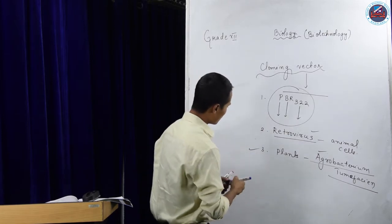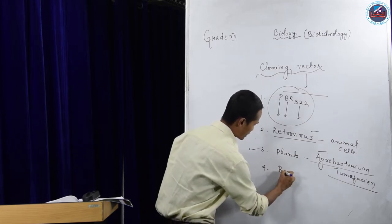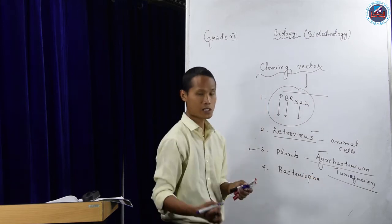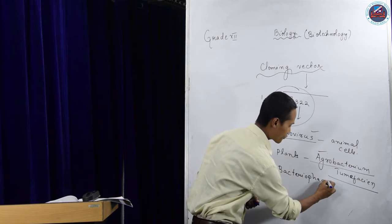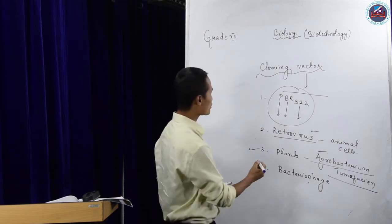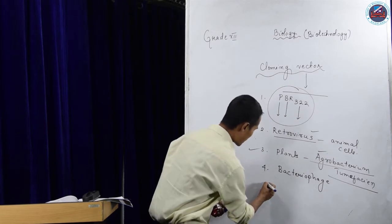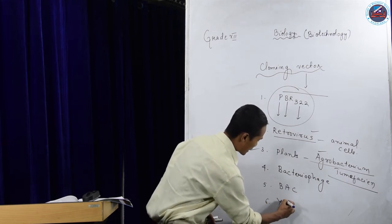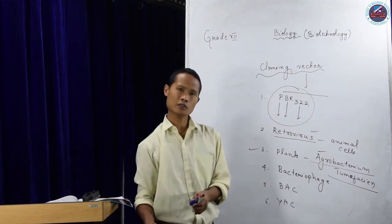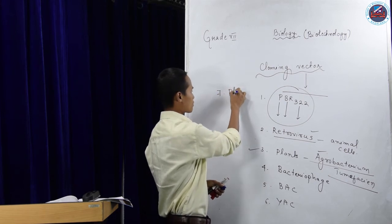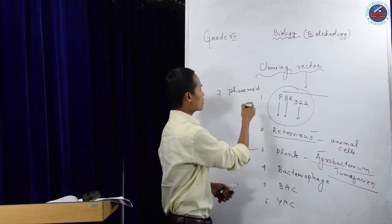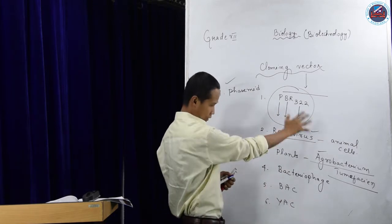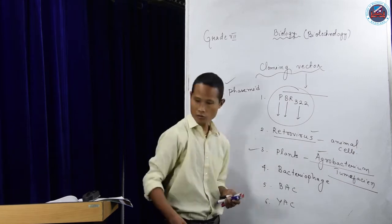Number 4, we can also use bacteriophages — a virus that infects bacteria — like T2 phage, which can also be used as a vector. Not only that, we have BAC, Bacterial Artificial Chromosome, and then we also have YAC, Yeast Artificial Chromosome. Number 7 is phasmid. This also can be used as a vector. So these are some examples of vectors that you may come across.